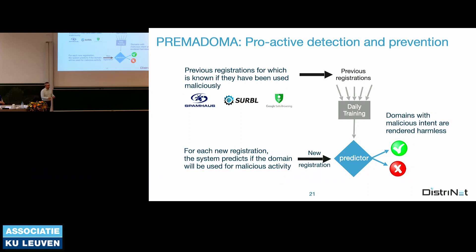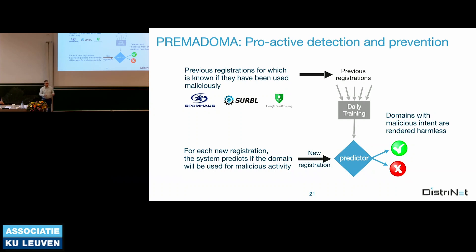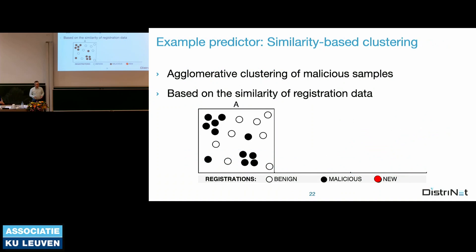The advantage of acting so early in a domain's life cycle is that the domain is not yet active, meaning we can block it before it ever becomes active. In the case of EURid, whenever we predict malicious intent, the domain does not go into the zone file, and a manual procedure is started to interact with the registrant — for instance, requiring identity information, which malicious actors typically don't want to provide.